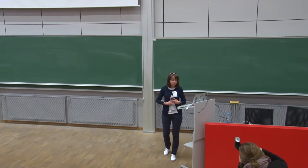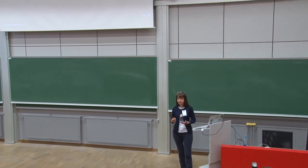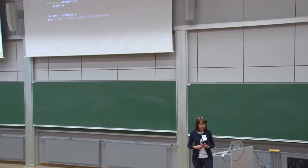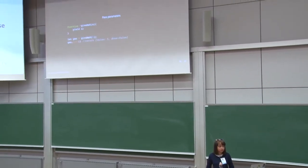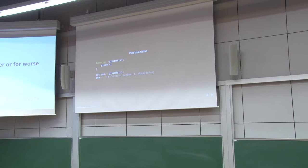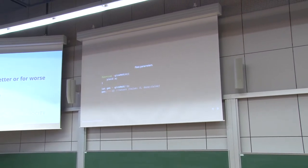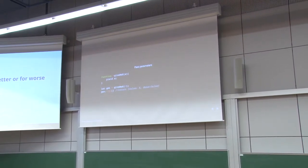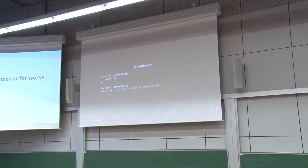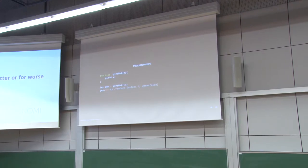You can pass parameters to the generator function the same way you pass to any other function. In this case, you pass five, and then when you call next, it will return you the value of five.